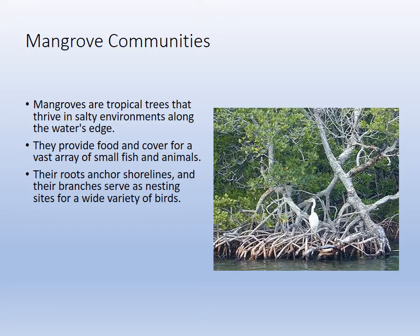Mangrove communities are tropical trees and the only plants that can actively remove salt. Our three species here are totally unrelated — we just call them mangroves because they all remove salt. They provide food and cover for fish and animals, their roots anchor shorelines, and they offer plenty of habitat.